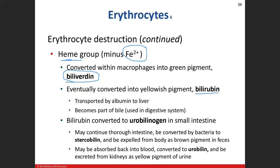We transport bilirubin to the liver using albumin — the predominant protein in our plasma. The liver uses bilirubin as part of bile, a digestive concoction that the liver makes and the gallbladder stores. When it's time to digest a fatty meal, bile is secreted into the small intestine. The important thing is that bilirubin ends up in the digestive system, where friendly bacteria in the large intestine convert it into stercobilin — which gives your poop its brown color.